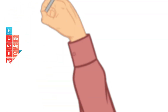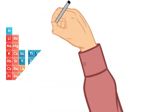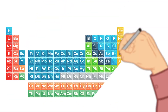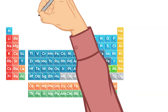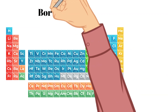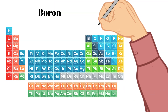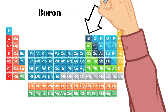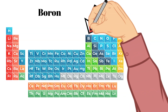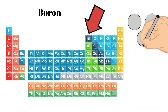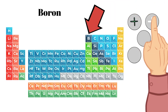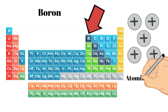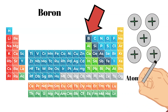We're going to be continuing through the periodic table and talk about the second four elements found there. Let's hop into the first one, and that is boron. Boron has an atomic number of five, meaning there are five protons in the nucleus. It also has an atomic mass of about 11.